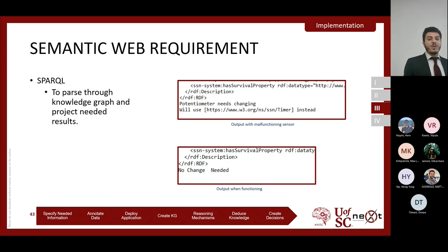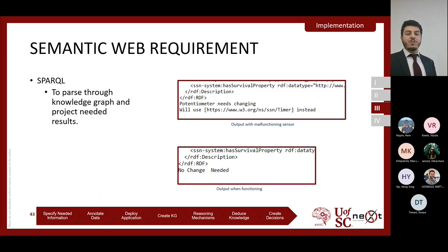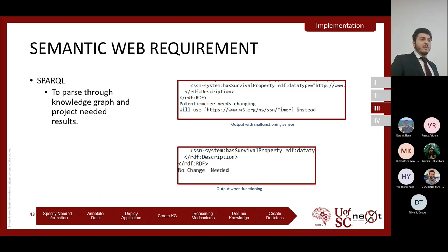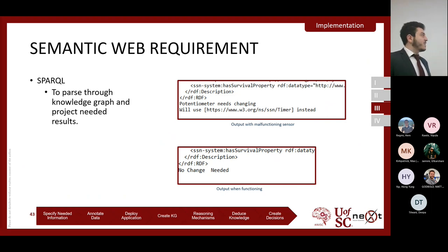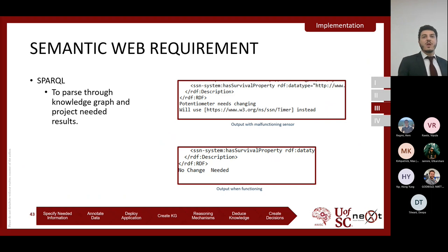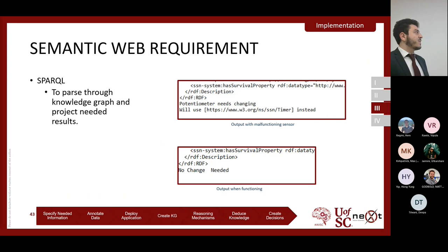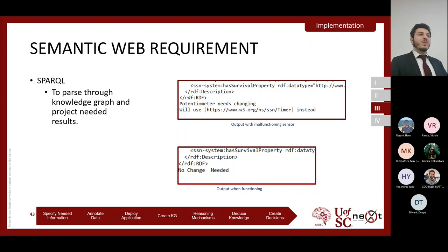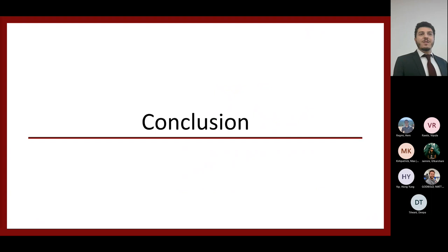Once we deduce this knowledge, we use SPARQL — a query language — to parse through our knowledge graph and figure out if the potentiometer needs to be changed. If it does need to be changed, SPARQL is also used to identify what other sensor can be used to move forward with the process. Two separate outputs: if the value is true, we parse the knowledge graph for an alternative sensor; if no change is needed, the only output is that we can move forward with our path as required.